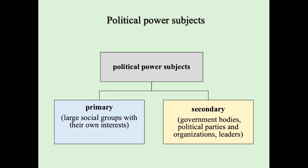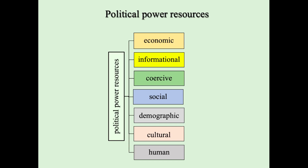Political power subjects are primary and secondary. Primary subjects are large social groups with their own interests. Secondary subjects are government bodies, political parties and organizations, and political leaders. Political power resources are divided into several groups: economic resources, informational resources, cultural resources, social, demographic, and human resources.